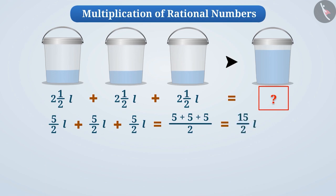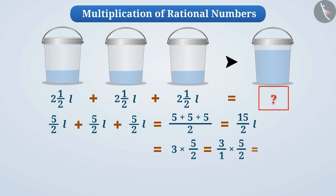Since the same number is being repeated again and again, we can also express it as multiplication of a rational number. As five by two is repeated three times, we can express it as a multiplication of three and five by two. Three can be written as three by one. Now, we multiply the numerators and the denominators to get fifteen by two, which is also written as seven and a half.